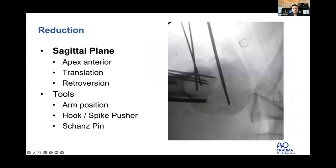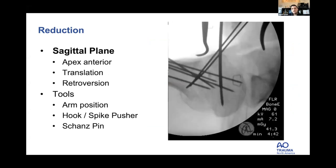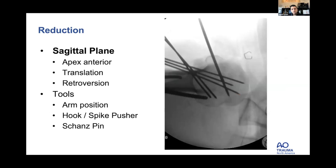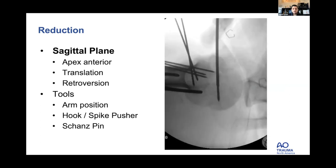I also look at translation — drawing a plumb line down the humerus, before correction it intersects the anterior third of the humeral head; after correction it runs down the middle. I look at retroversion similarly. Here a Schanz pin along the lesser tuberosity shows the arm in anteversion; I bring it back to about 10–15 degrees of retroversion, for a total of about 20–25 degrees. Once the correction is done, I back out the wires and redirect them.